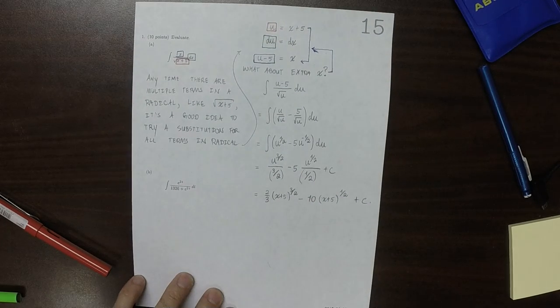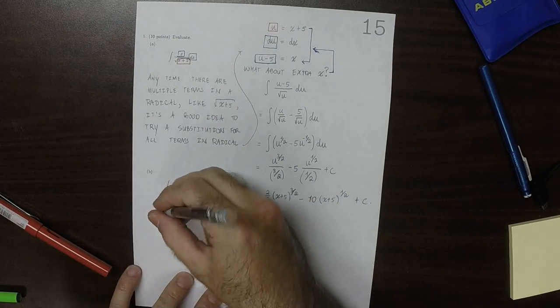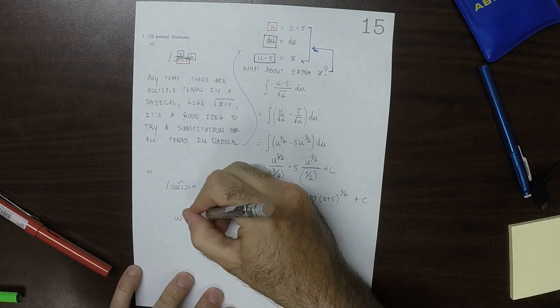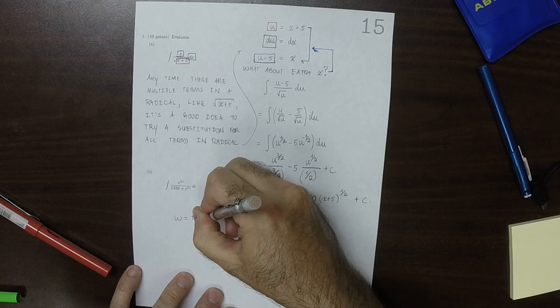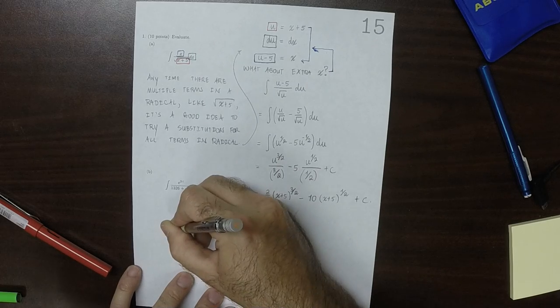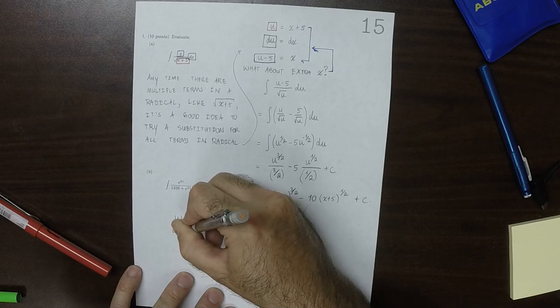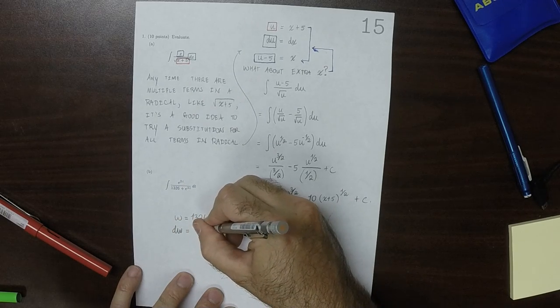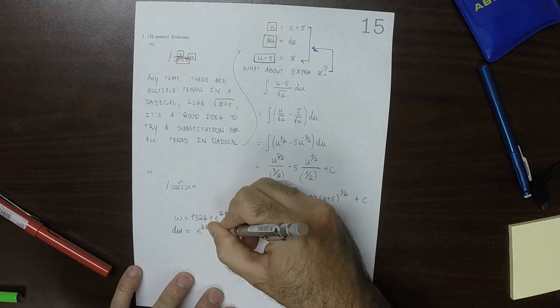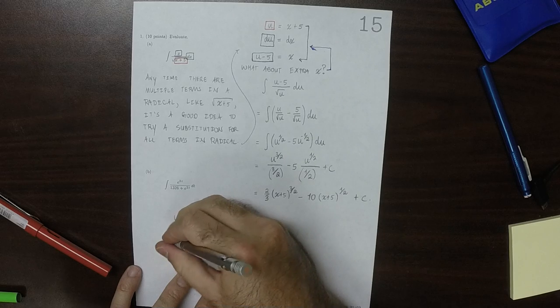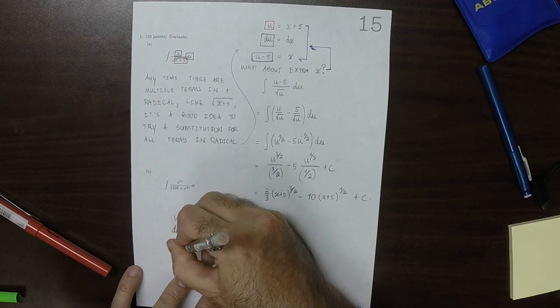For this one, again, a substitution. So how about w? w is 1326 plus e to 2t. So dw is e to 2t times 2dt. We don't have 2dt, so I'll move that 2 to the other side.